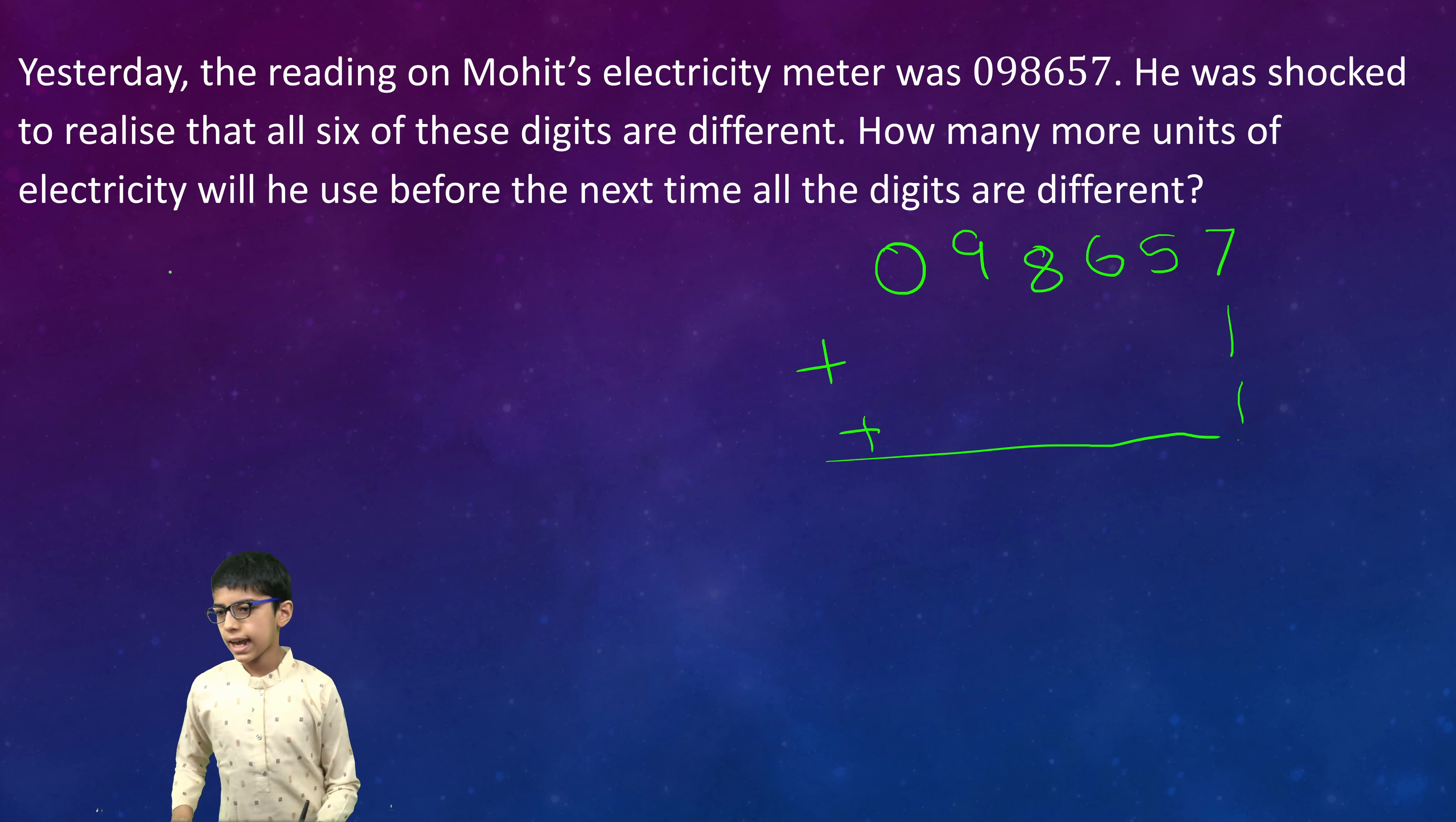Here I will write all the numbers. First when we add one we get 098658, but 8 and 8 match. Then we add one again, so our answer would be 098659, but 9 and 9 again match.